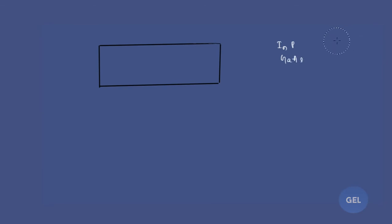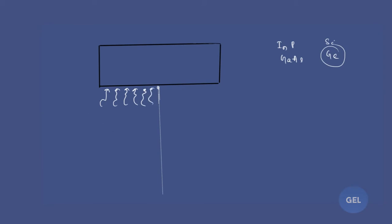Compound-type semiconductors include indium phosphide and gallium arsenide, while element-type semiconductors include silicon and germanium. We will take any of these. I am taking germanium. After taking a germanium semiconductor, up to a certain point we are going to do doping — doping by Na, which is the acceptor impurity — using a trivalent element, from one side up to a particular point.